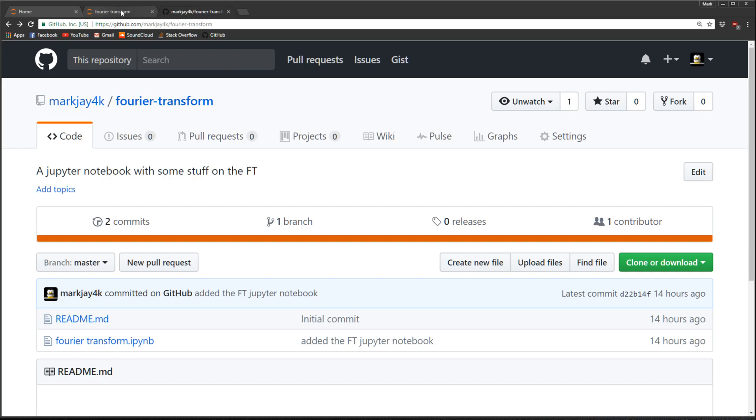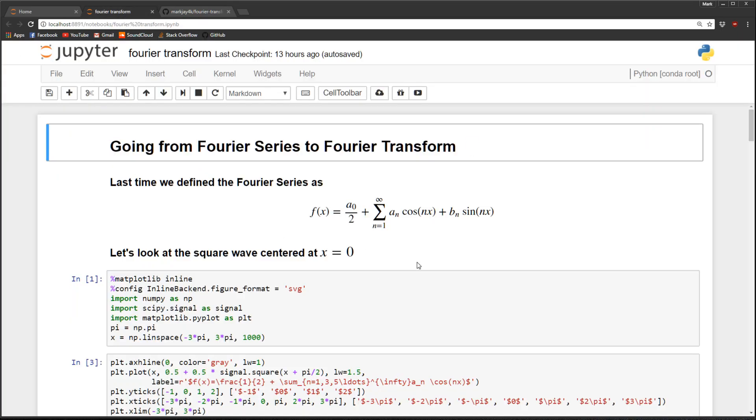Let's get started. I'm going to jump over to the notebook. And where we left off was we showed the Fourier series, which was some periodic function f of x could be written as a series of cosines and sine waves.